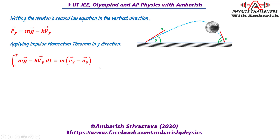Applying the impulse-momentum theorem, the integral from 0 to T of (mg minus k·vy) dt equals the change in y-momentum, i.e., final y-momentum minus initial y-momentum. Since the net y-displacement is zero, the k·vy integral vanishes, leaving simply mg·T equal to the change in y-momentum.